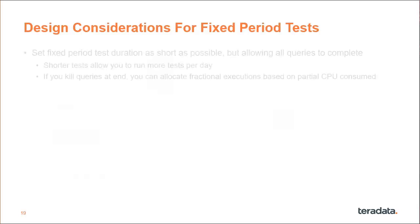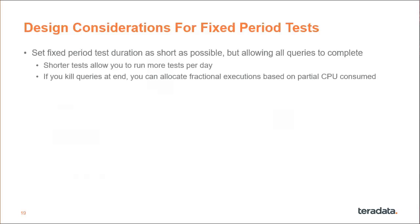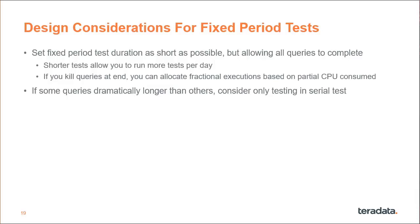There are some design considerations for the fixed-period tests. You'll want to set the period of the test as short as possible while still allowing queries to complete — shorter tests allow you to run more tests per day. If you kill queries at the end, you can allocate fractional executions based on partial CPU consumed. If you've got some queries that are dramatically longer — say most are in the one-second to two-or-three-minute range but a couple are in the 50-minute or two-hour range — you may want to run those only in the serial testing, not as part of the workload testing.